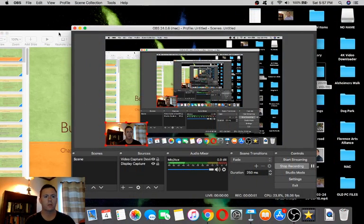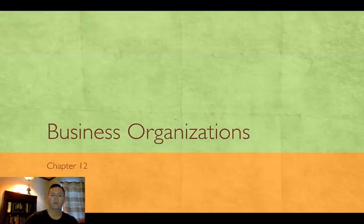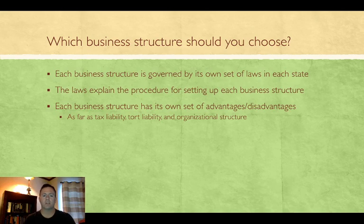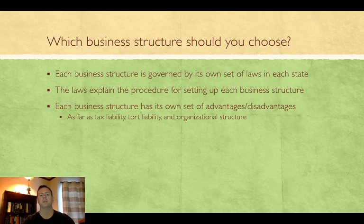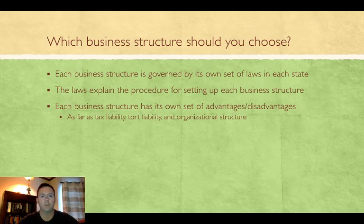We're going to start now by talking about the first two types, the most informal of the business entities. Each business structure is governed by its own set of laws in each state, and they all establish their own procedures for how you go about forming them. Usually that's done through the Secretary of State's office of the state that you're incorporating in. You want to make sure to be familiar with your state's laws depending on where you incorporate.